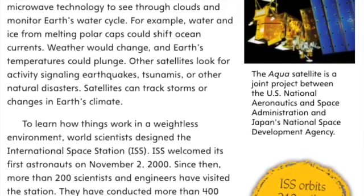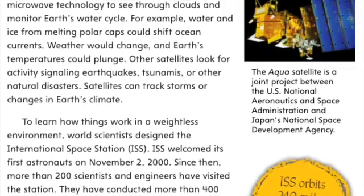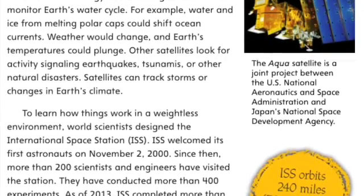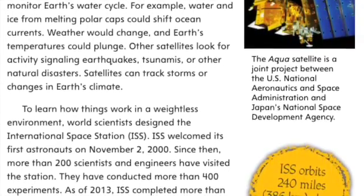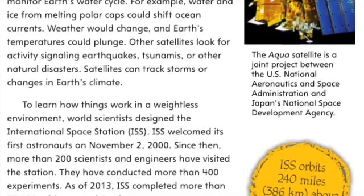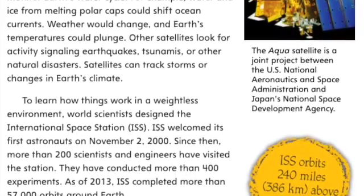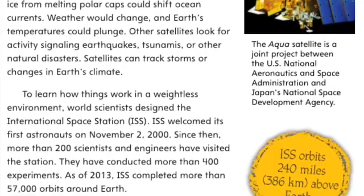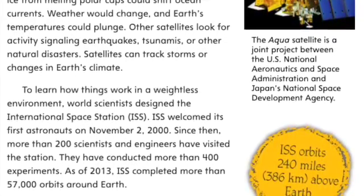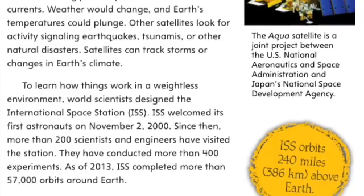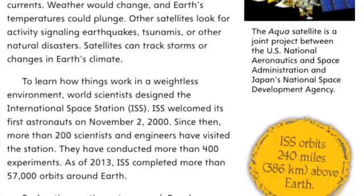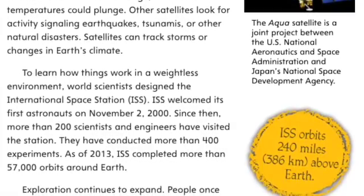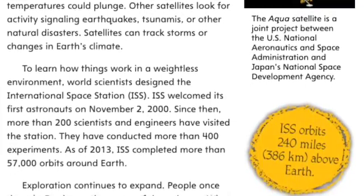To learn how things work in a weightless environment, world scientists designed the International Space Station, or ISS. ISS welcomed its first astronauts on November 2, 2000. Since then, more than 200 scientists and engineers have visited the station. They have conducted more than 400 experiments. As of 2013, ISS completed more than 57,000 orbits around Earth.